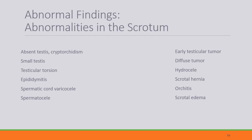Orchitis is inflammation of the testicle, associated with mumps. Hydrocele is more common during acute orchitis and scrotal edema. Scrotal edema can occur during conditions like congestive heart failure, portal vein obstruction such as with cirrhosis of the liver, epididymitis, torsion, lymphedema, and I've also seen it with acute anaphylaxis.